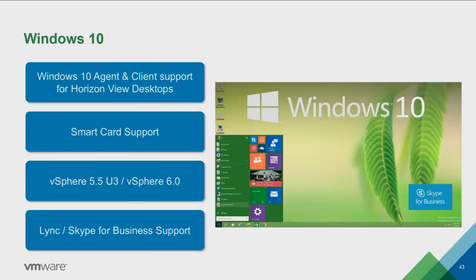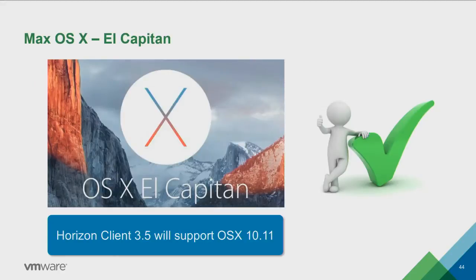Windows 10 support — you saw Microsoft on stage at the keynote, and VMware loves Windows 10. We've got Windows 10 support from day one. Minimum vSphere 5.5 Update 3 is required, though we recommend vSphere 6. OSX El Capitan is supported with 3.5 — if you're upgrading your Mac to El Capitan, make sure you upgrade your Horizon client to 3.5 as well. We always recommend using the latest Horizon client regardless.